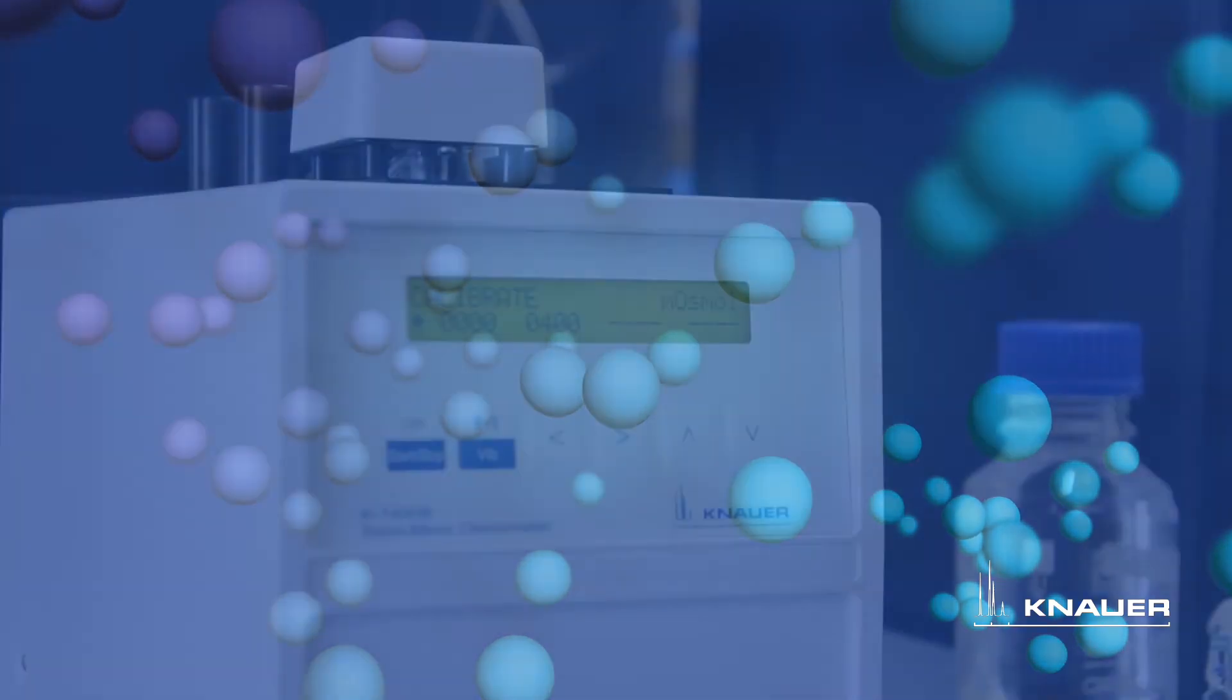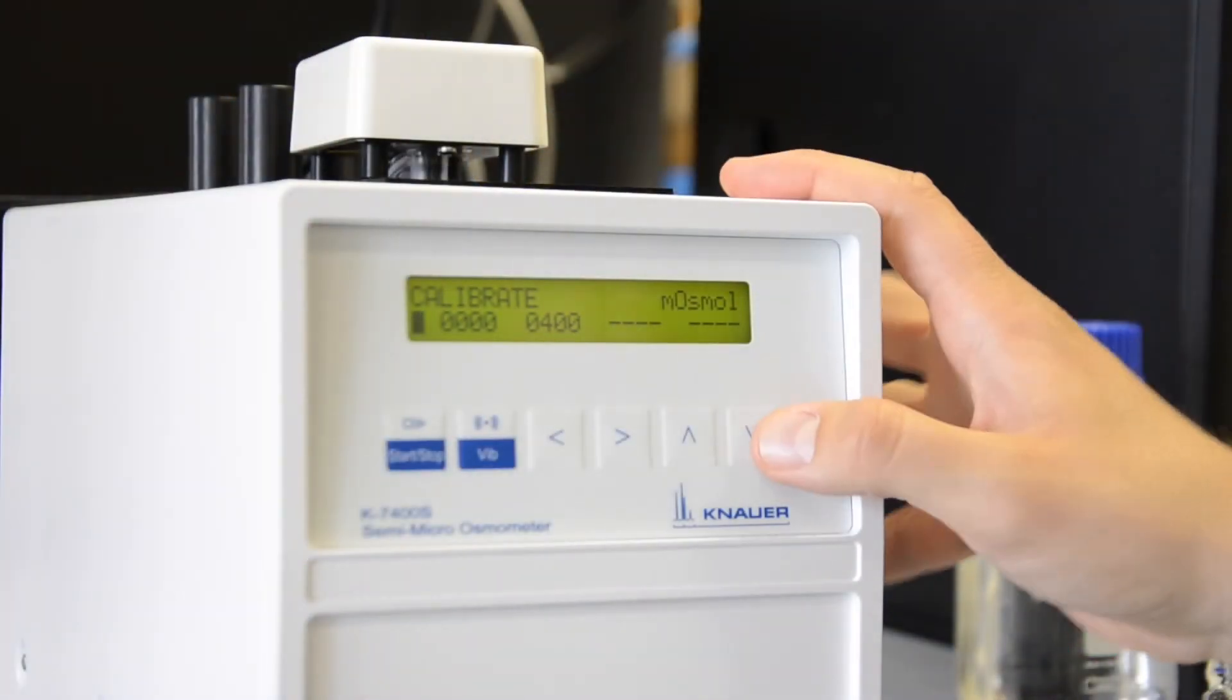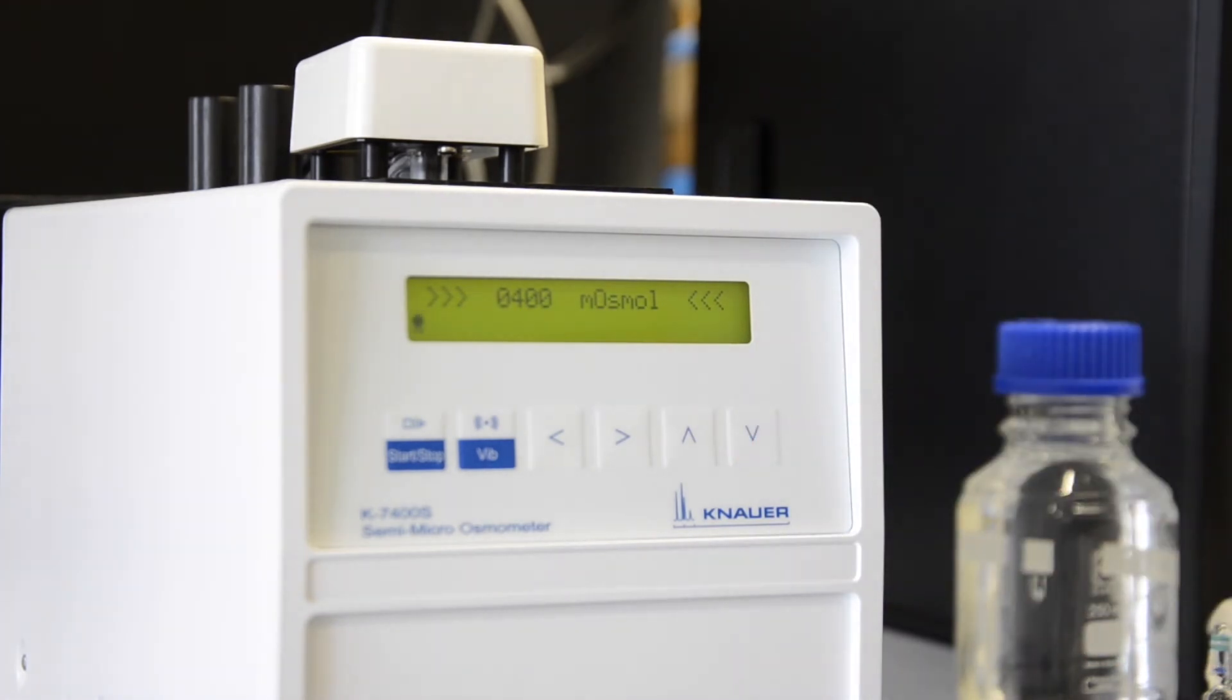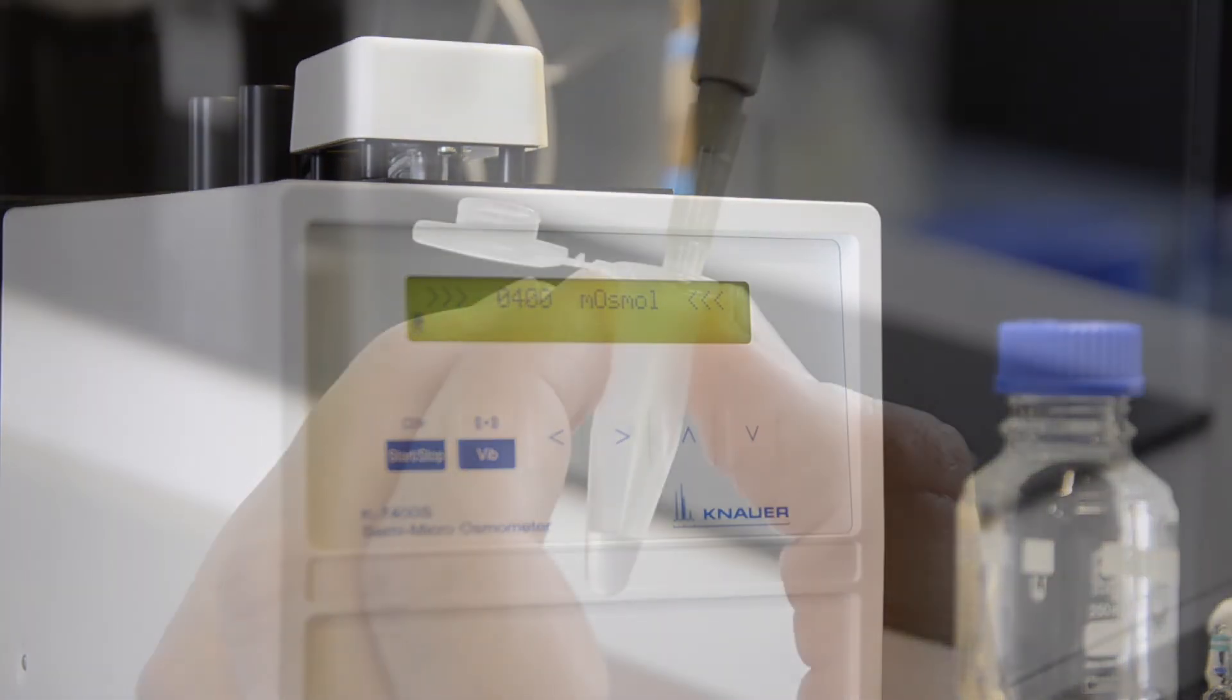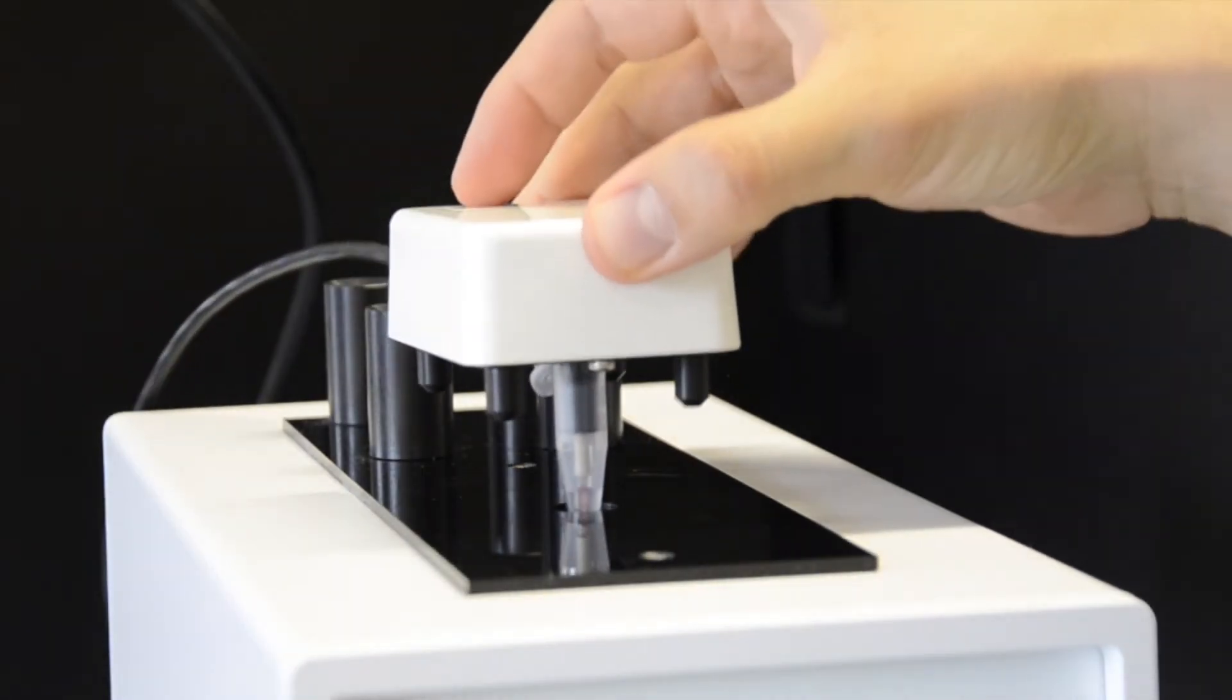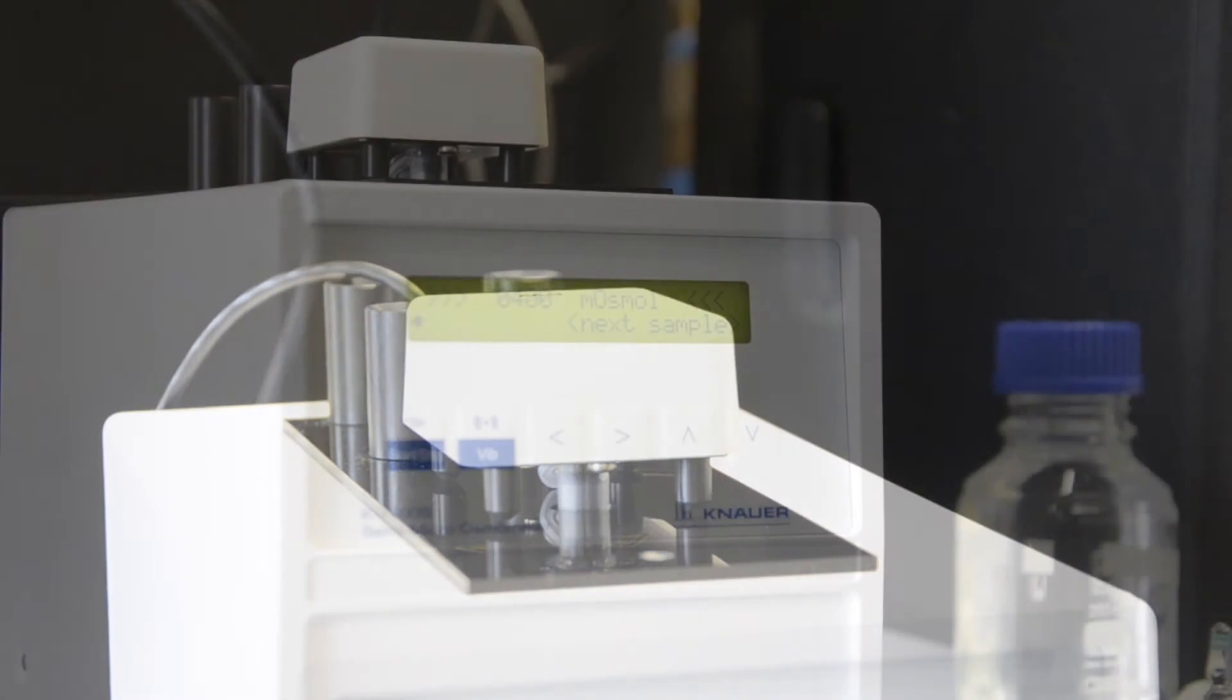After you calibrated the osmometer you can start to analyze your samples. Use the up or down button to go to the measurement menu. Now you can fill a new sample tube with the correct volume of sample and start the measurement after the tube is placed into the cooling cavity.